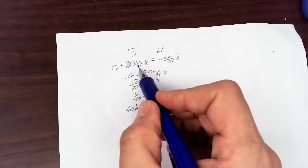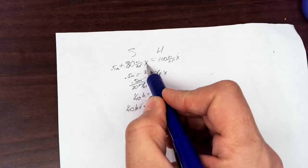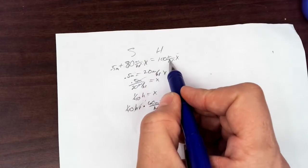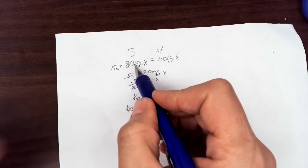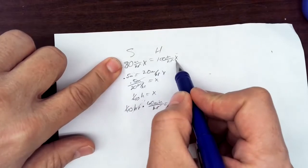So, distance equals rate times time. Here is rate times time. X is time. This is rate times time. So, this is a distance. This is a distance.